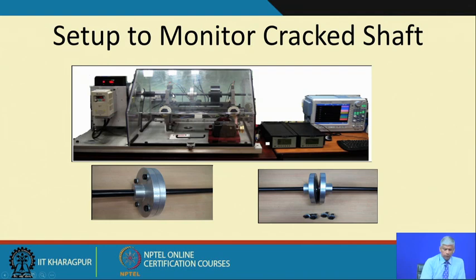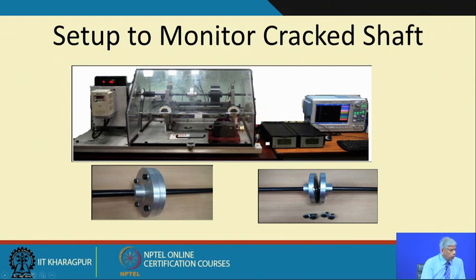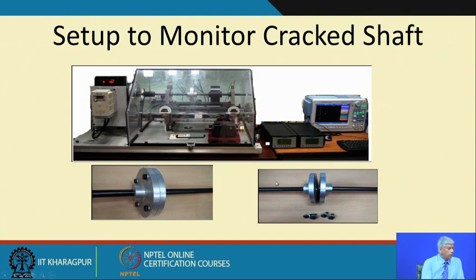In the laboratory, using the same machinery fault simulator, we have a shaft and this black disc is used to load the shaft. The shaft is simulated with cracks. There are two aluminum flanges with four bolts — if I remove all four bolts the two shafts come apart, and if I join them they form a single shaft. By loosening these bolts I can simulate cracks into shafts, and this kind of experiment was done in our laboratory.